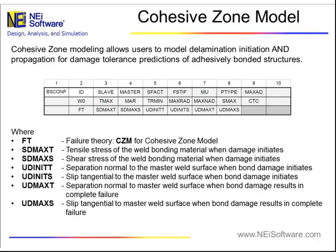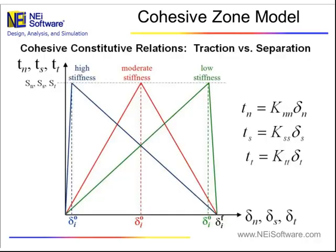The way the input works is we're basically putting this on our contact definition. On our contact definition, you would choose CVM for cohesive zone model. Then you're basically defining allowable stresses and allowable displacements. There are two components to them: the tensile component and the shear component, basically to model the mode one crack growth and the mode two crack growth.